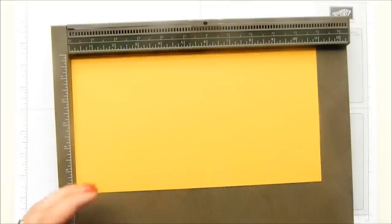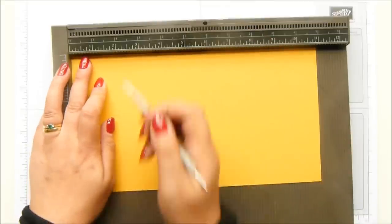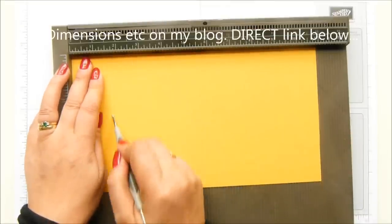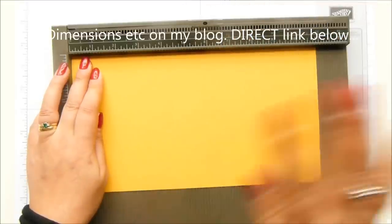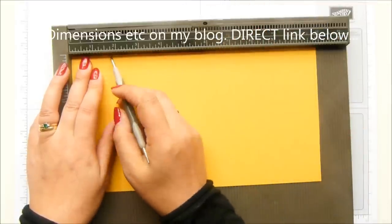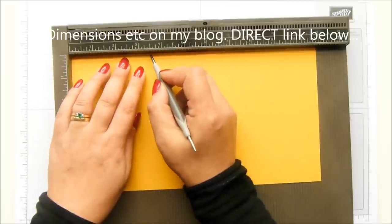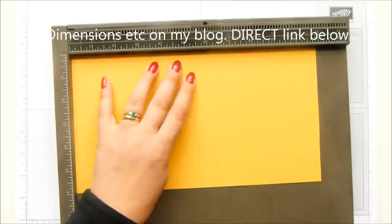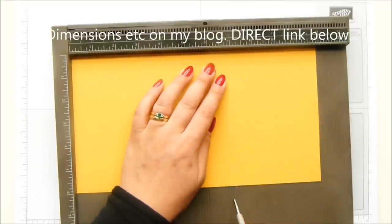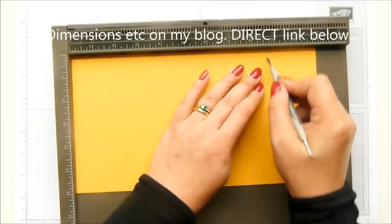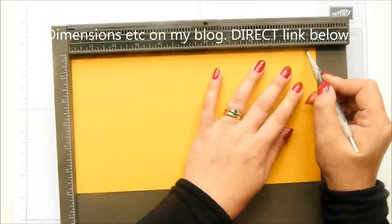We're going to score on the long side first. And you score it at one and three quarters of an inch. I'll give you the Imperial first, then metric. And description bar below, that's where you'll find the link to this project. So one and three quarters, three and a half, five and a quarter, seven, eight and three quarters and ten and a half inches.